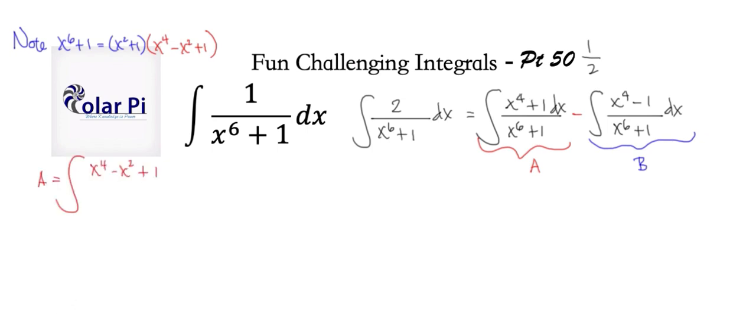For A, notice that we can write the numerator of A, which is this here, in this fashion, and it's helpful for us to do that. Also notice that this here is the quartic that's a factor of x to the sixth plus one. So we can write divide by instead of x to the sixth plus one, if we so chose, we can write this here, right?